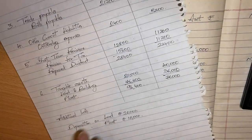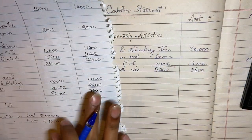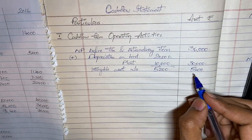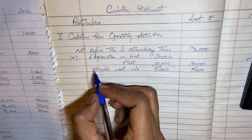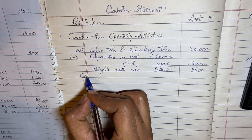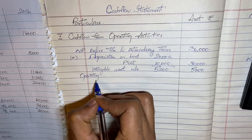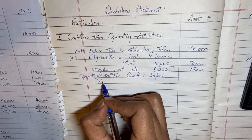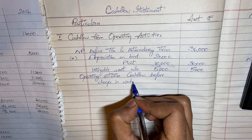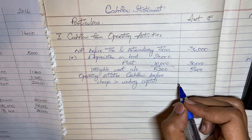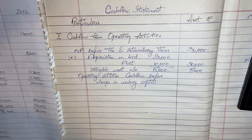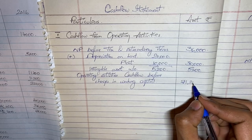From the notes there is nothing else to add. So the operating activities cash flow before changes in working capital comes to 71,200.